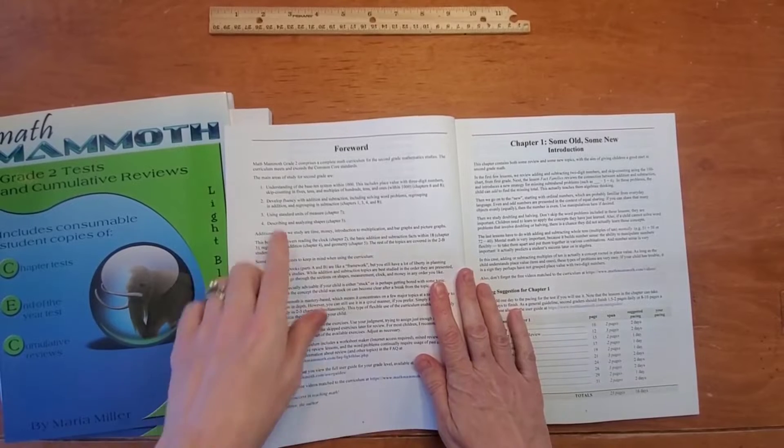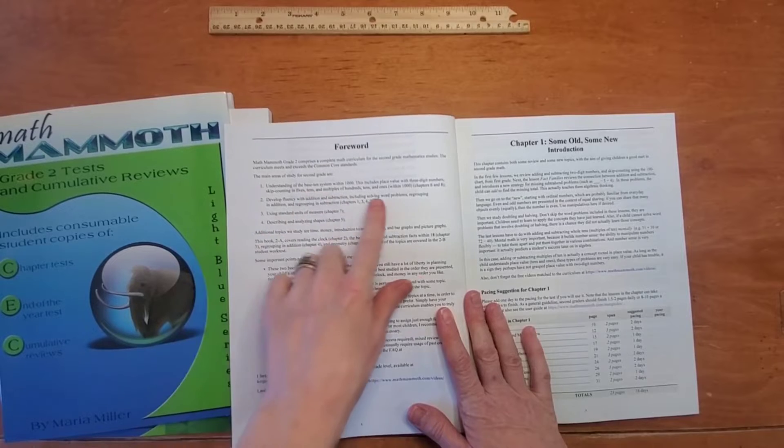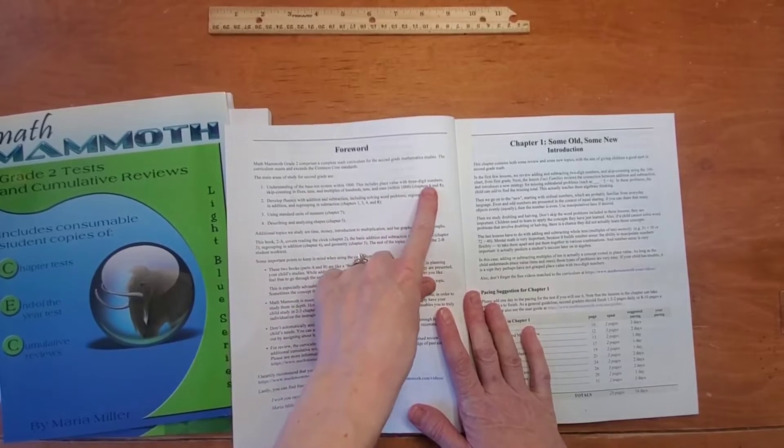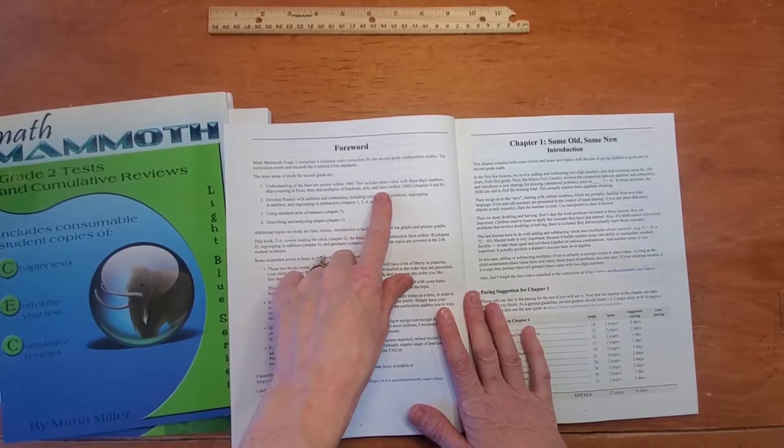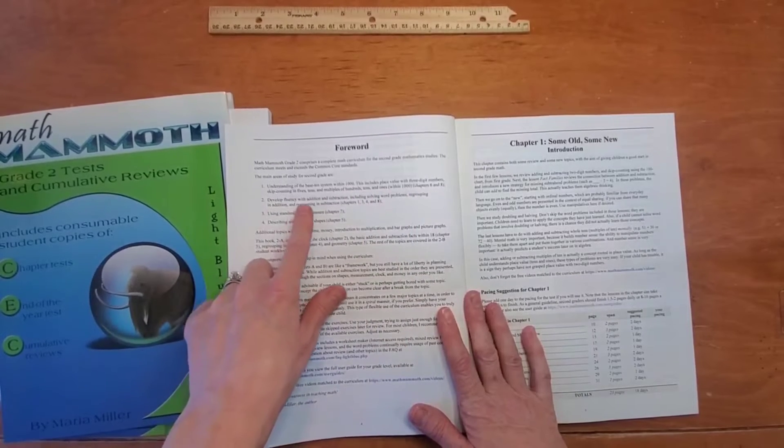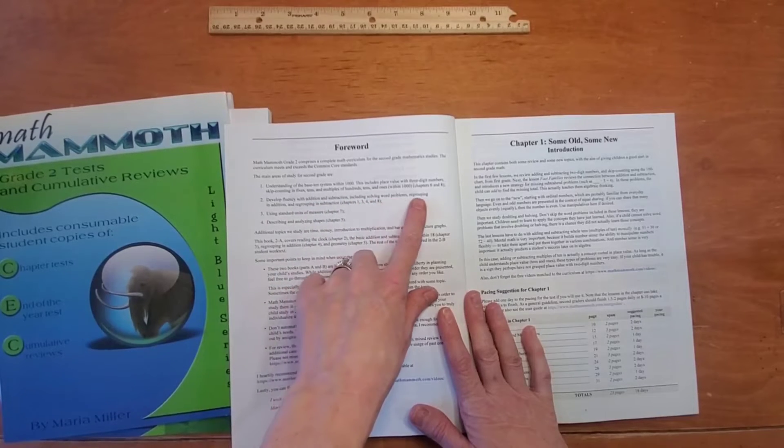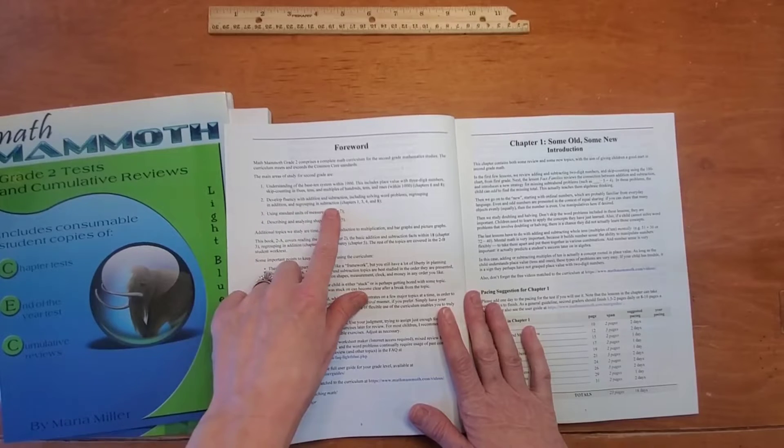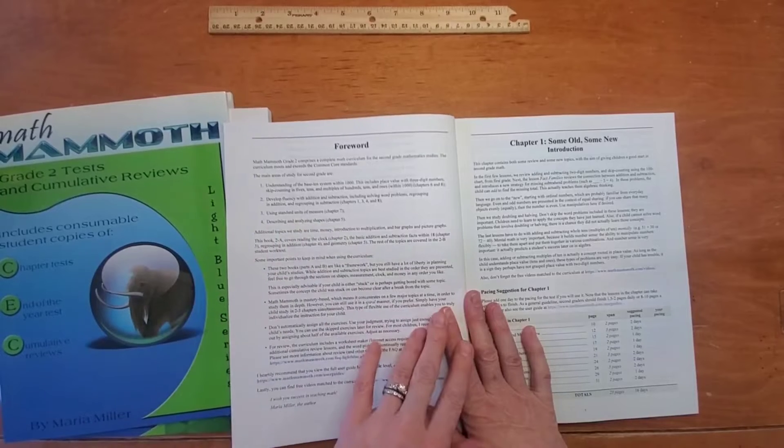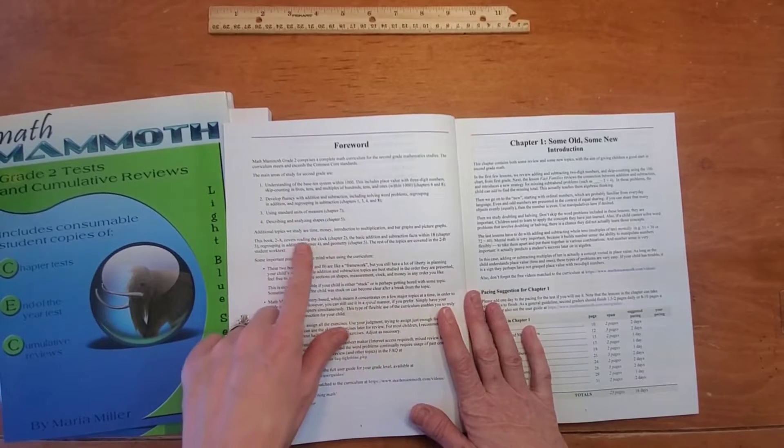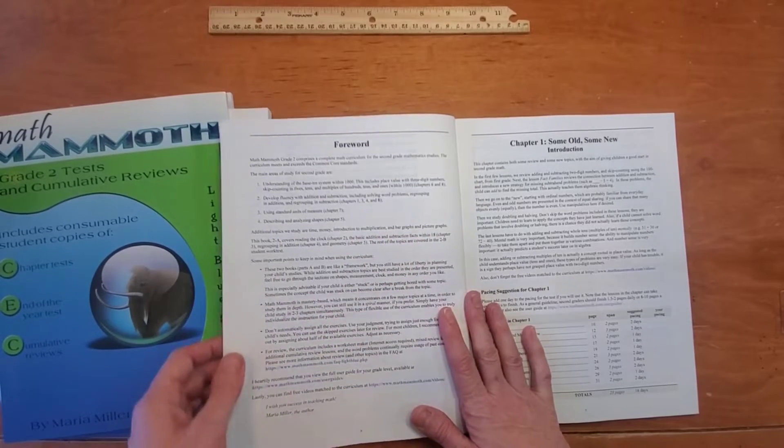For second grade the goals are to understand the base tens system within a thousand. This includes place value with three digit numbers, skip counting in fives, tens, and multiples of hundreds, tens, and ones within a thousand. Develop fluency with addition and subtraction, including solving word problems, regrouping in addition, and regrouping in subtraction, using standard units of measure, describing and analyzing shapes. There are also time, money, introduction to multiplication, bar graphs, and picture graphs that are covered.